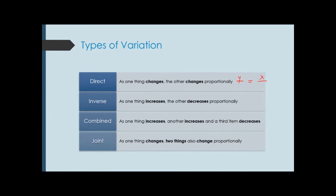Inverse variation means as one thing increases, the other decreases proportionally — they go in opposite directions. When written as a proportion, because they go in opposite directions, the input is in the denominator. Combined variation is where multiple items are involved: one increases and another decreases, so you could have x and y where one changes at the same rate as the output and the other is in the denominator.